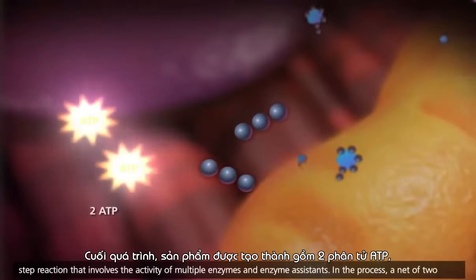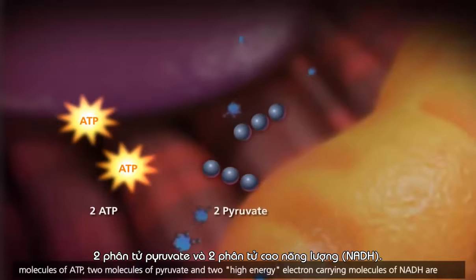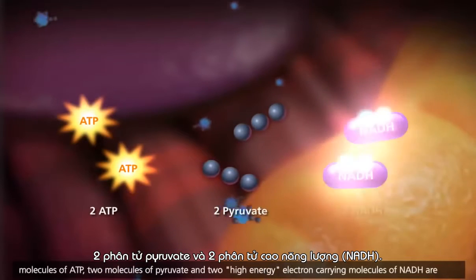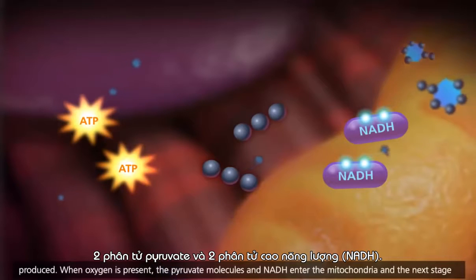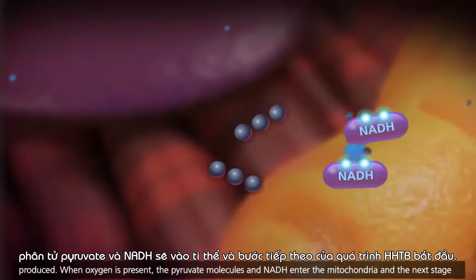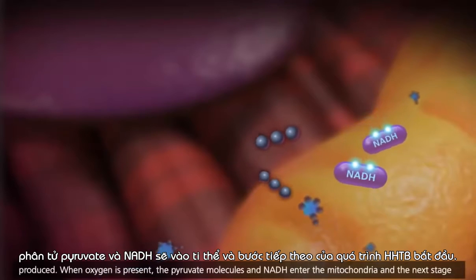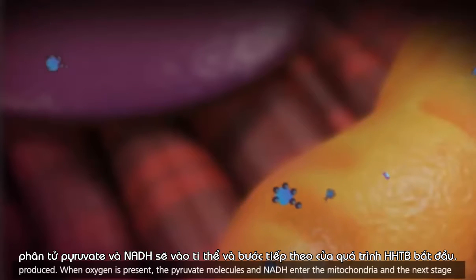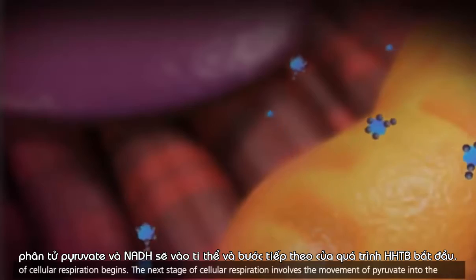In the process, a net of two molecules of ATP, two molecules of pyruvate, and two high-energy electron-carrying molecules of NADH are produced. When oxygen is present, the pyruvate molecules and NADH enter the mitochondria, and the next stage of cellular respiration begins.